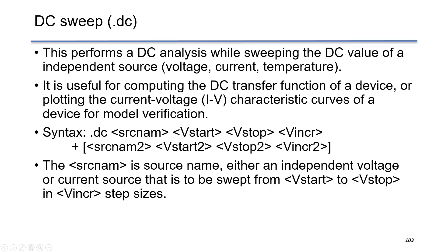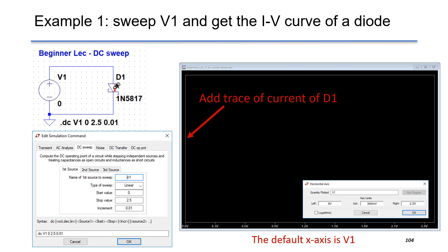In LT SPICE, the DC sweep can also be nested up to three variables. In this example, we will sweep the voltage source V1 to get an IV curve of a Schottky diode D1.